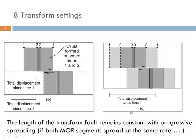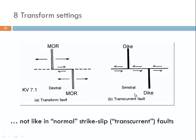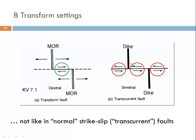We need to distinguish trans-current faults in the continental lithosphere, which are just normal strike-slip faults. Here we might have the offset of pre-existing features such as a dike formed at a certain stage and later displaced by strike-slip faulting. With increasing accumulation of strain we will have more and more displacement, and these segments of a dike would move further apart. Also, the length of the trans-current fault would increase. This is not the case in the mid-oceanic ridge.